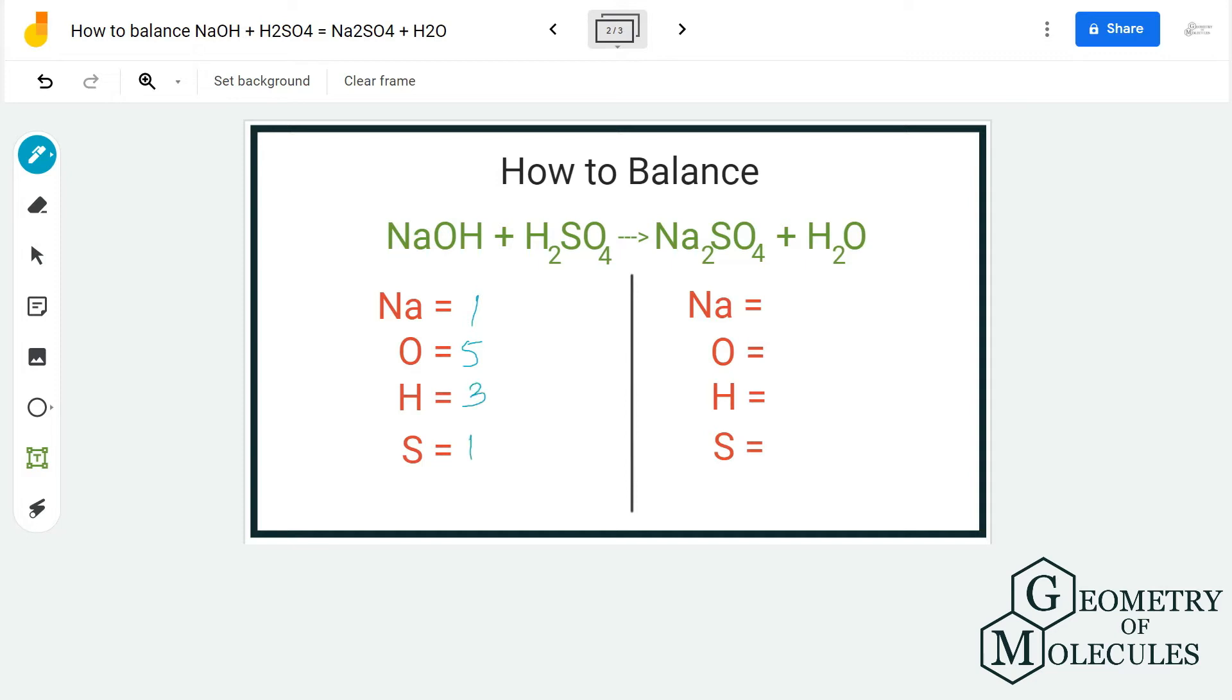So now we have sorted the reactant side. Let's move on to the product side. For product side we have two atoms of sodium. For oxygen we have 4 plus 1, which makes it 5. For hydrogen we have 2, and for sulfur we have only one.